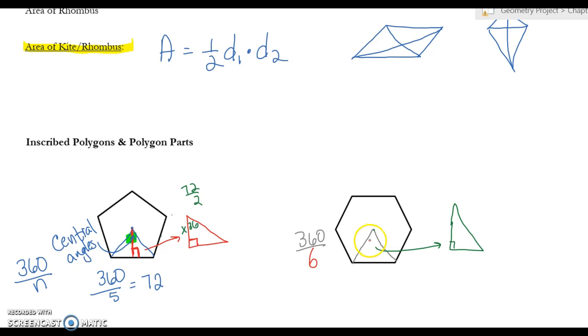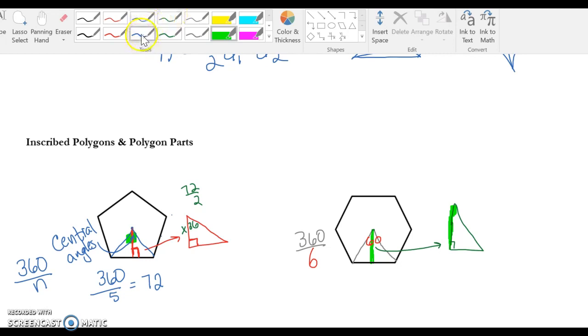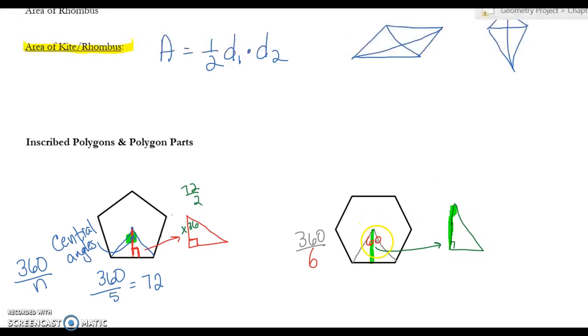And now my apothem, I'm just going to highlight it green this time. This is my apothem right here, and so that takes that right triangle, and it's half of that central angle, so this angle is 30. And then that's the side, and we'll have to do different things to find pieces, but those are key things you have to be able to know.